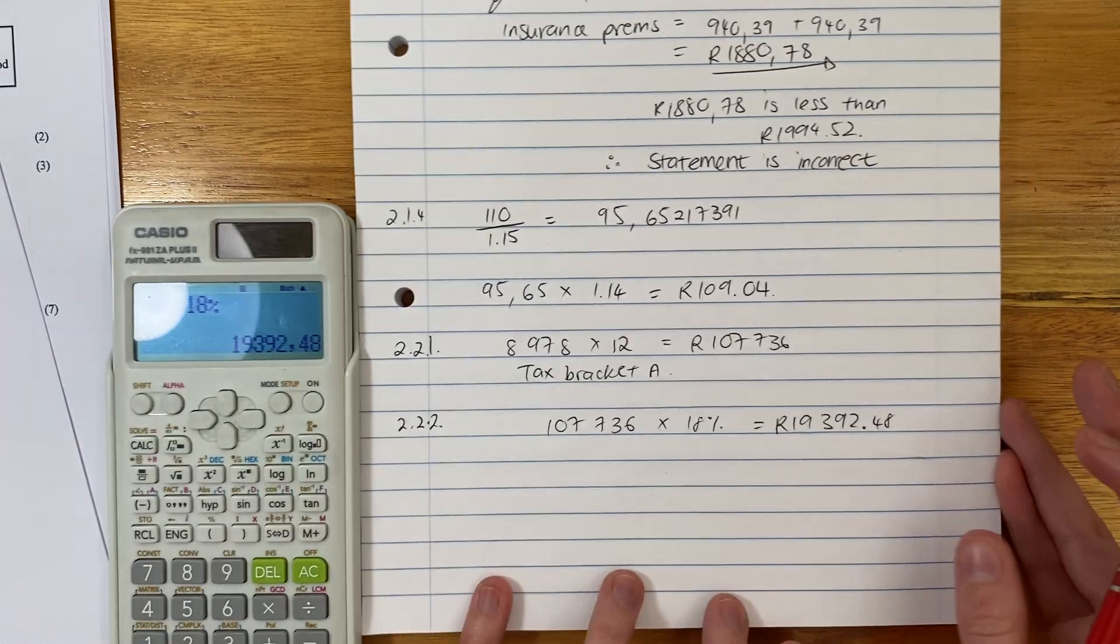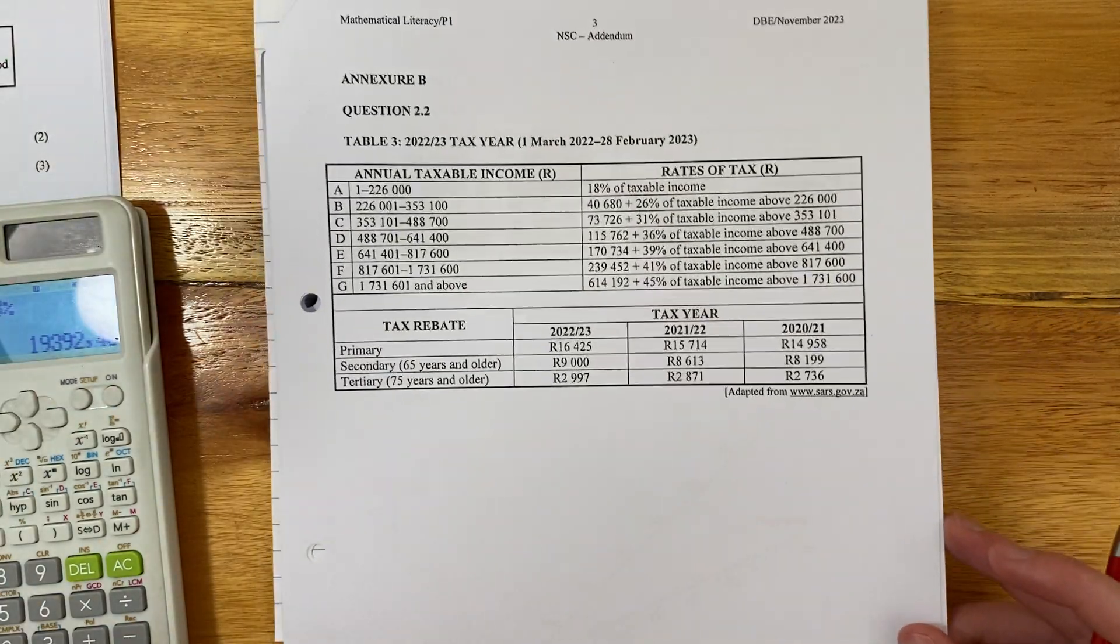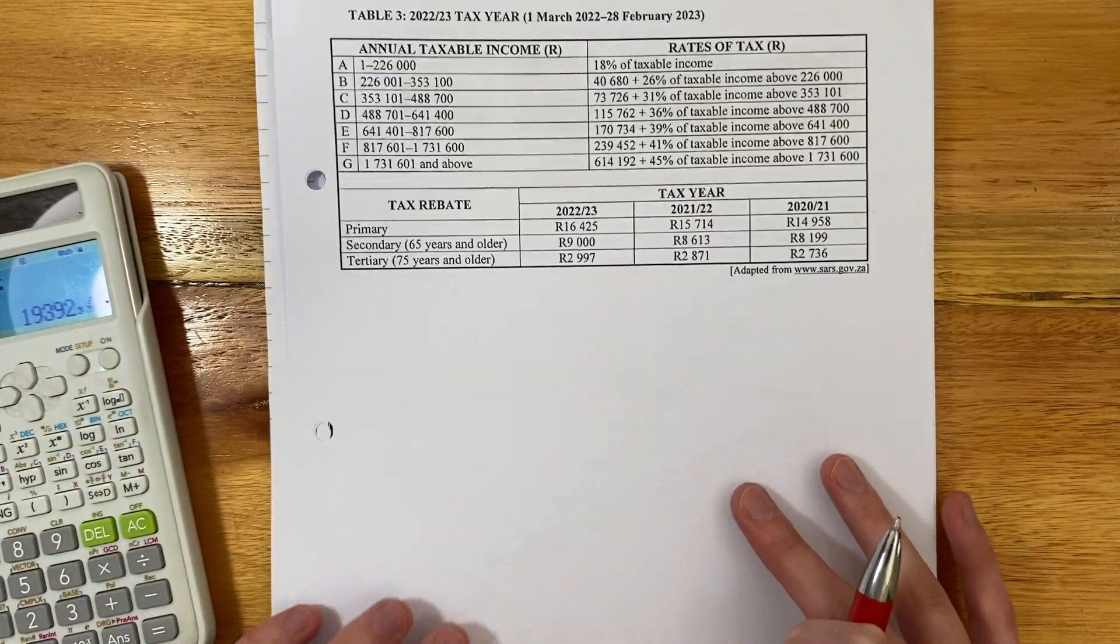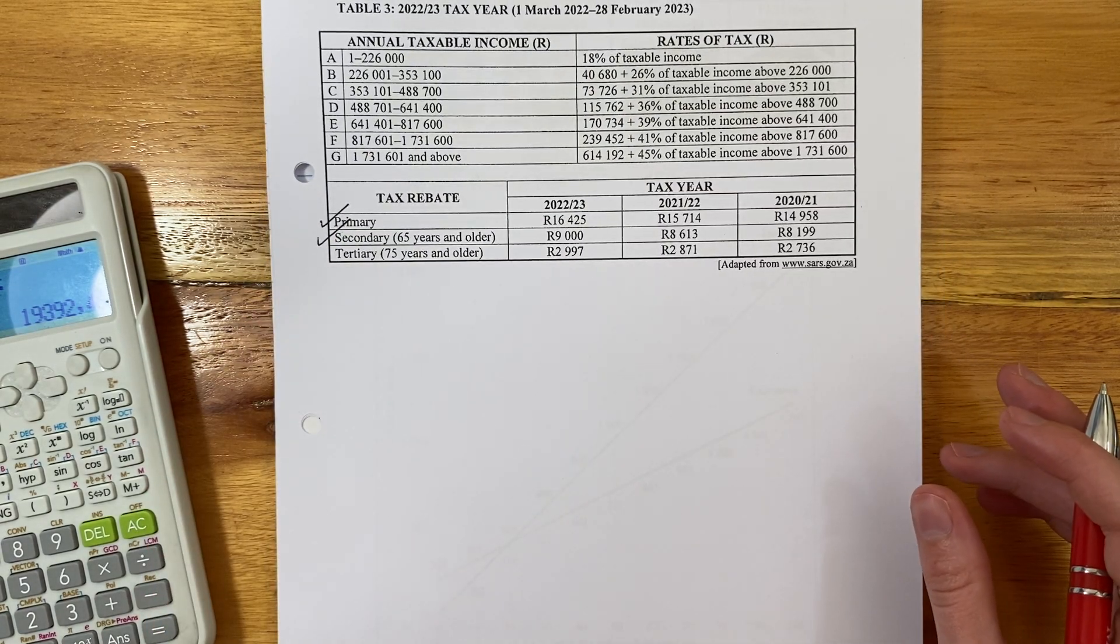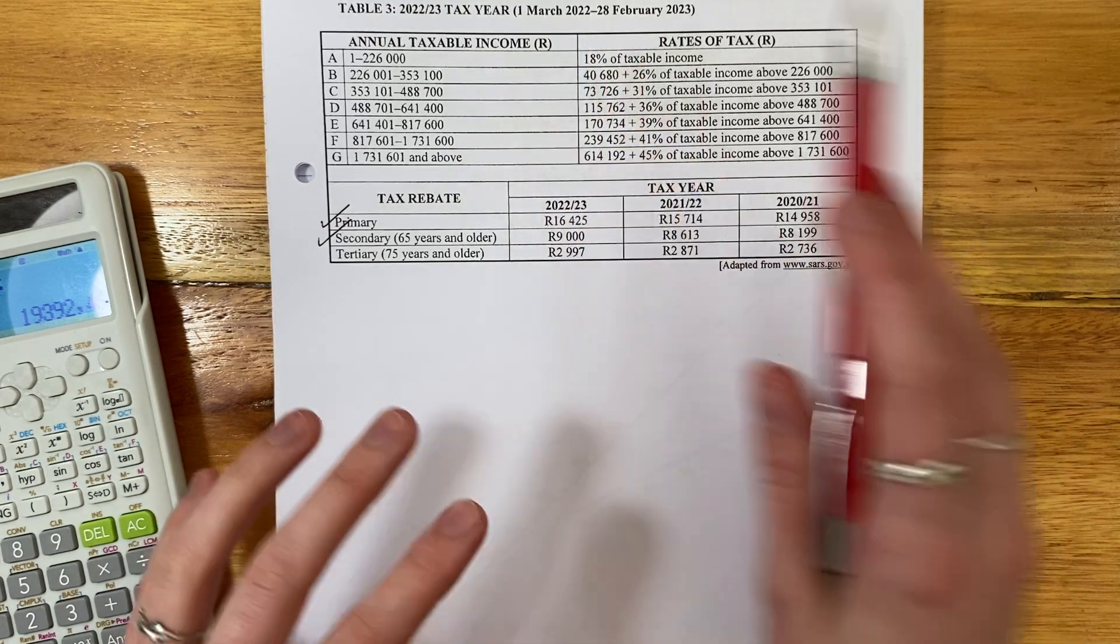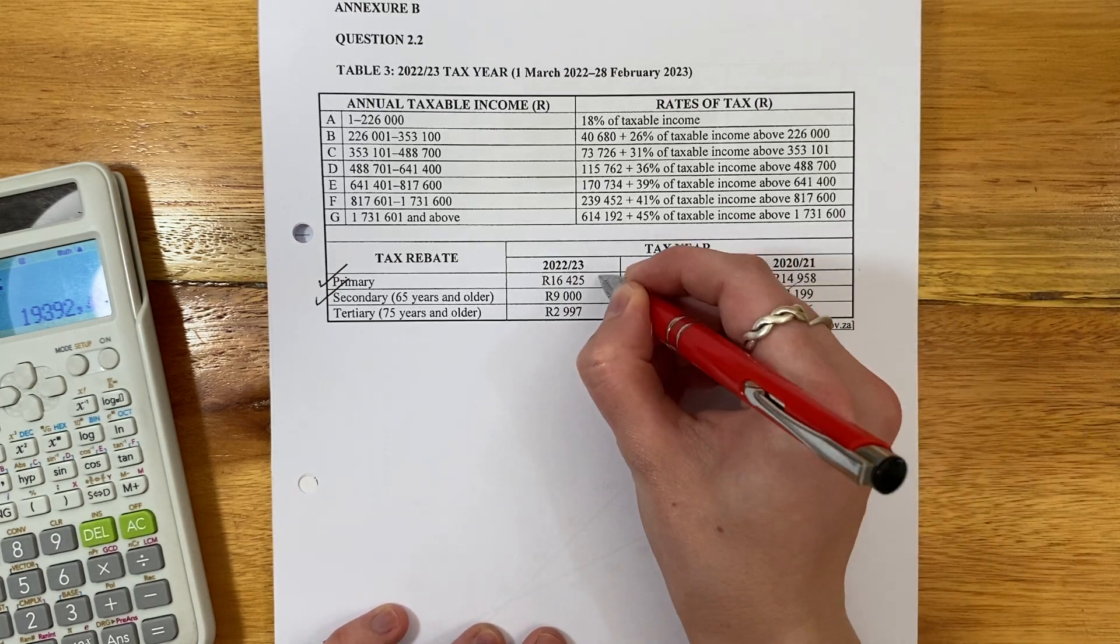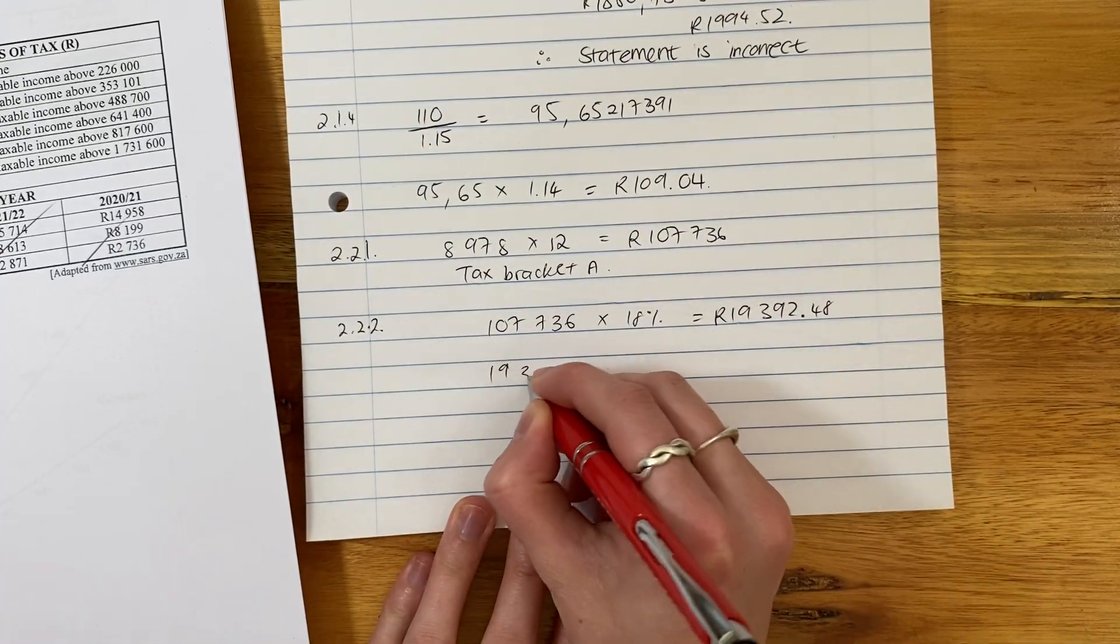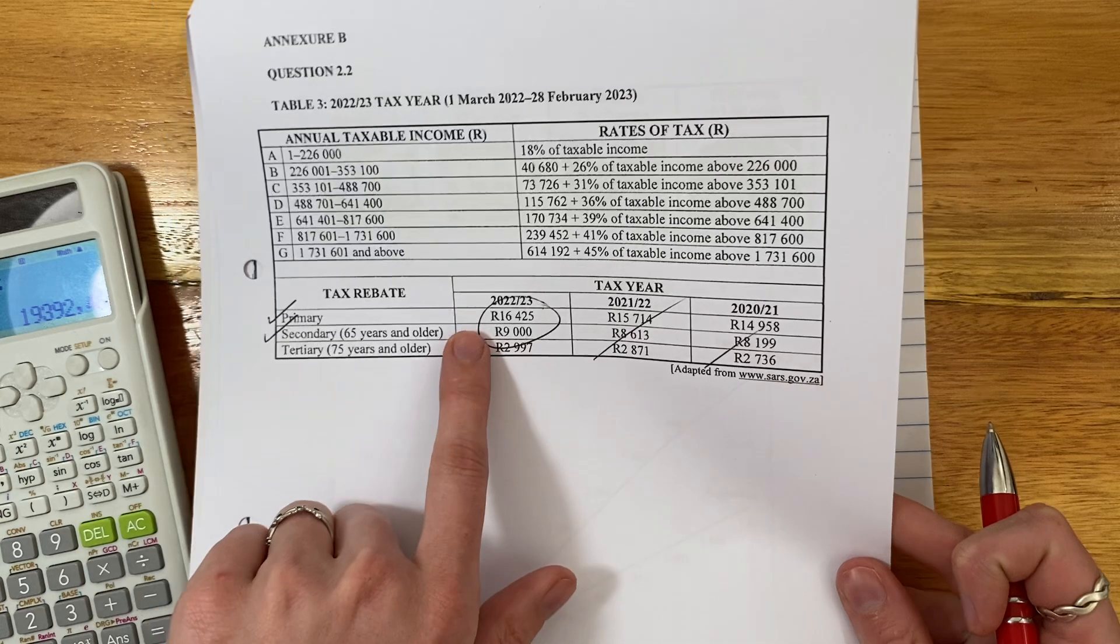And that is how much tax he would pay. Now, but what's very important about this is remember he has rebates. And rebates are based on what? Rebates are based on age. So how old is our guy, David? He is 68. So we know that he is going to qualify for primary and secondary, not tertiary, because he's not over 65. So what tax year is this? Importantly, it is 2022 to 2023. So ignore these. We don't care about those. We're looking at those there, because he is primary and secondary.